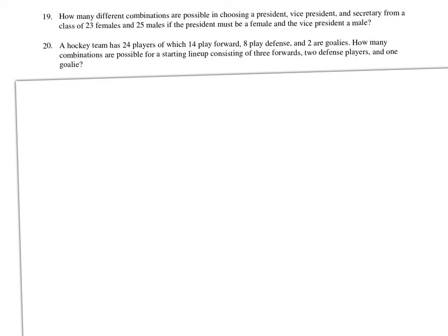Next, we have 24 players with a breakdown by position. We need to separate this into categories. We need three forwards from 14 players — order doesn't matter, and the problem uses the word combination — so that's 14C3. Then do the same for defense and goalie as separate combinations, and multiply them all together.